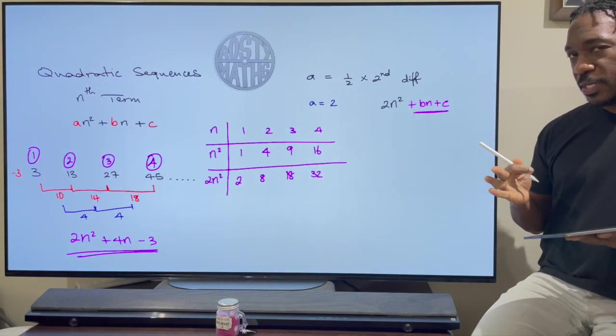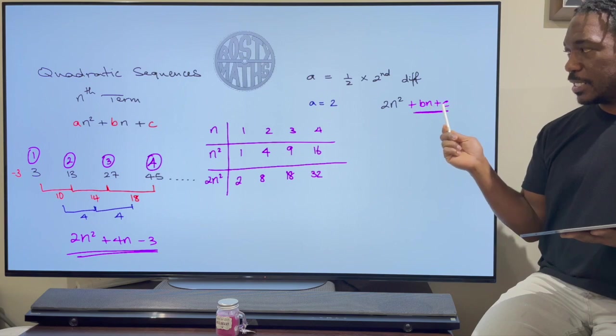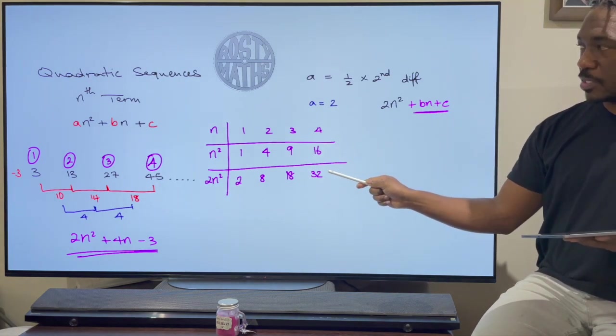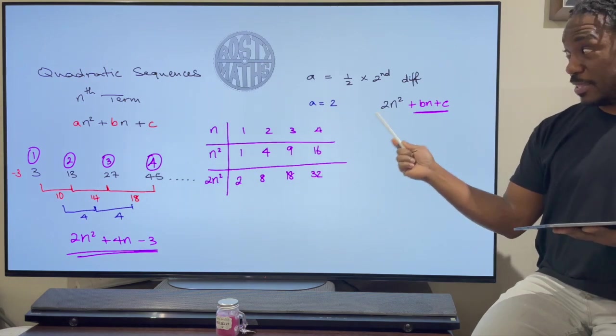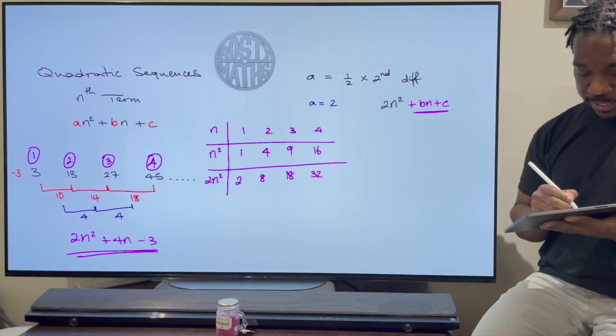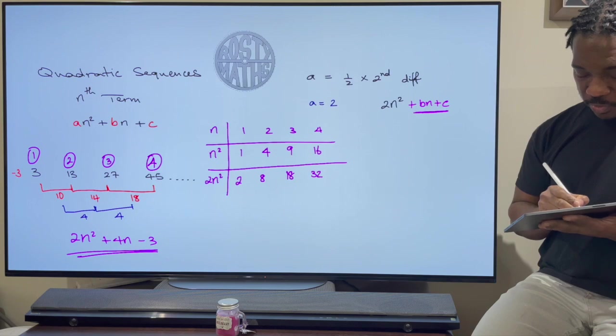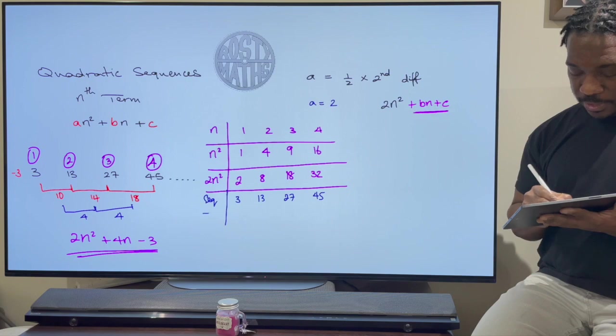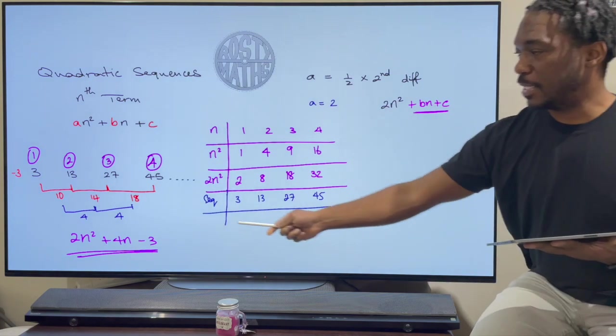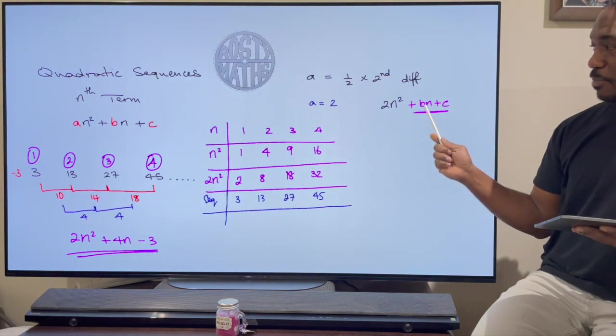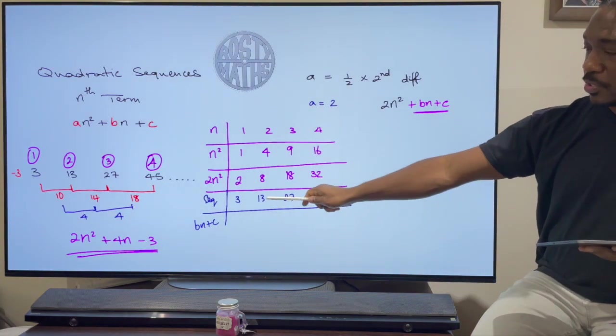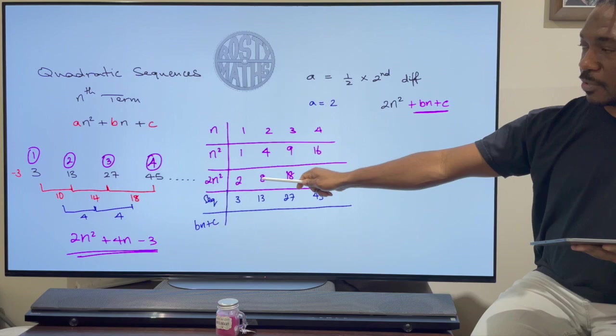Now remember what I said. In order to find that linear sequence I need to subtract my original sequence from this here. Or subtract this from my original sequence I should say. So let me just quickly write down my original sequence. And now in order to find my linear sequence down here the bn. In order to find that down here I now need to do this take away that.